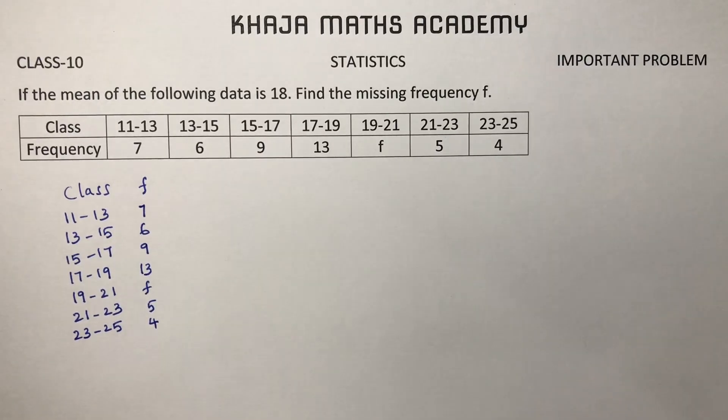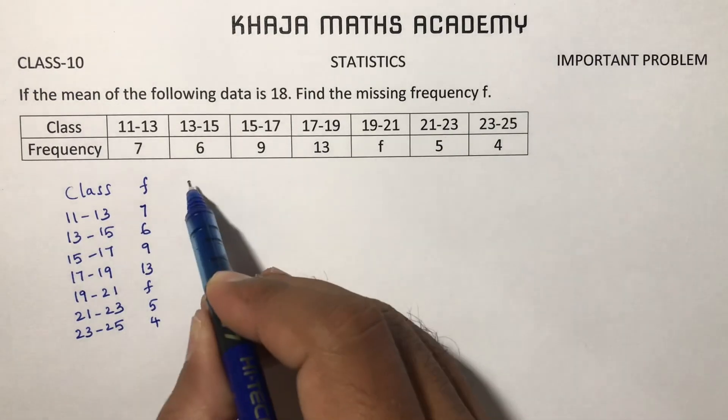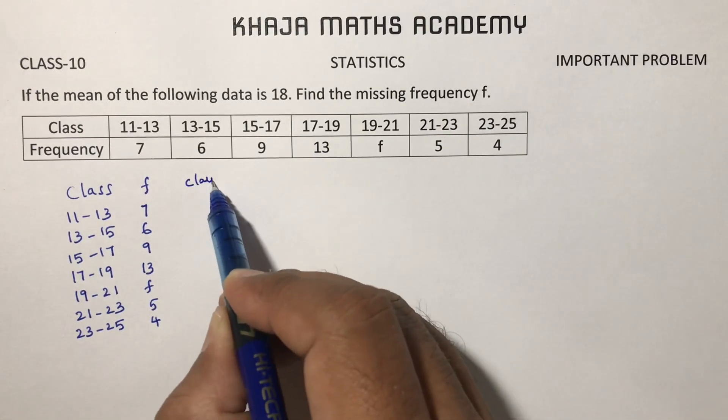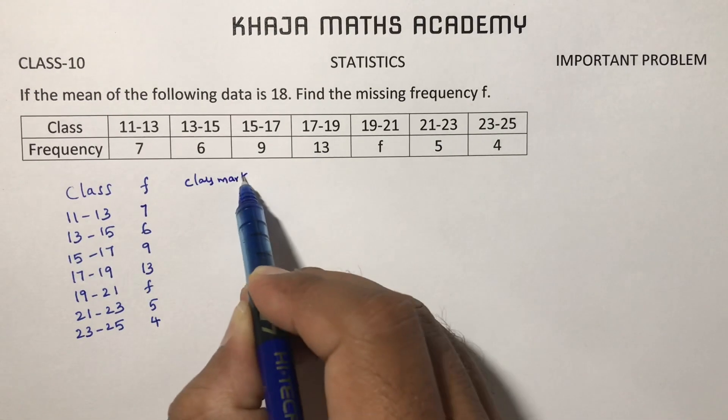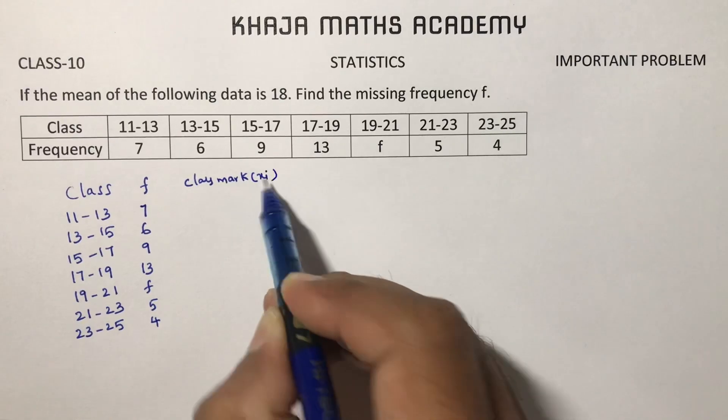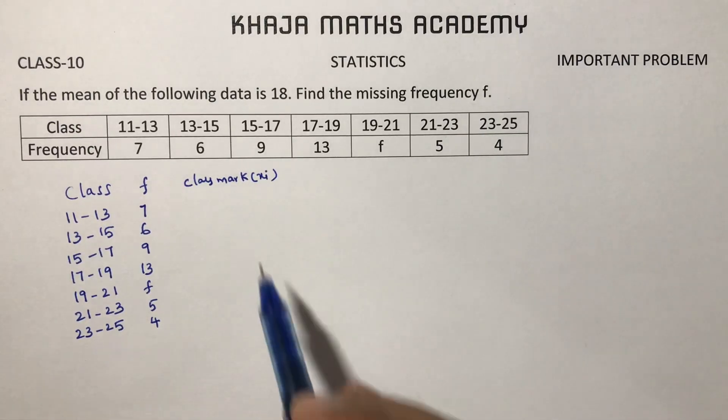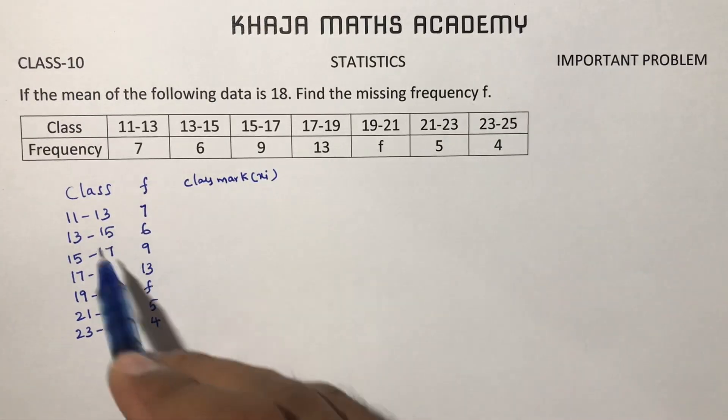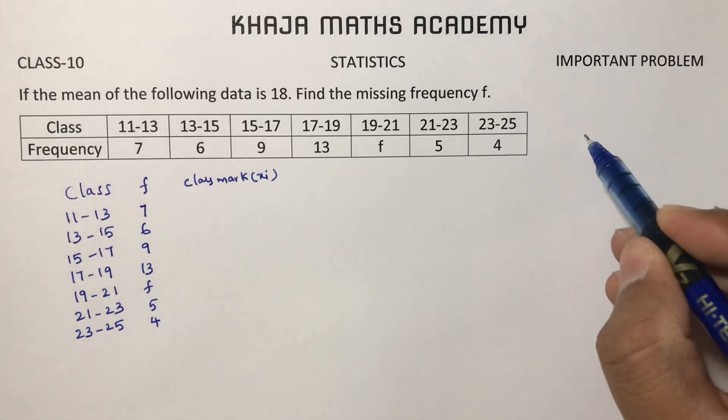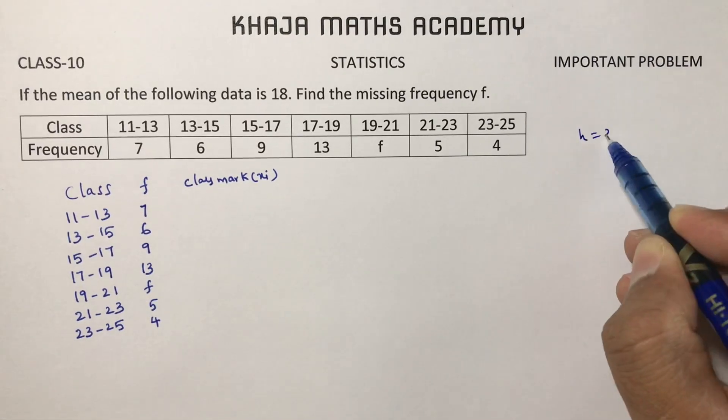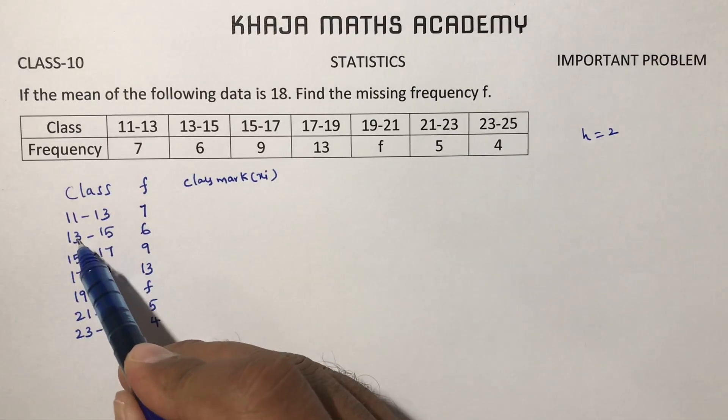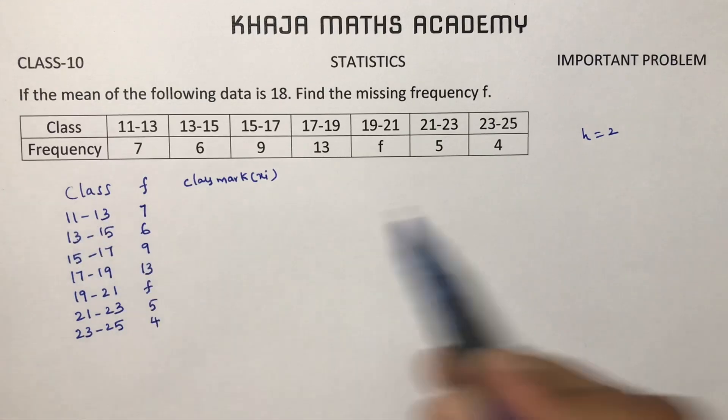For mean, first we need to find class marks. For calculating mean, first we need to calculate class marks Xi. Before writing class mark, write the value of h for this problem. H is class size, and class size is 2. I told subtract from down to up, so class size is 2.